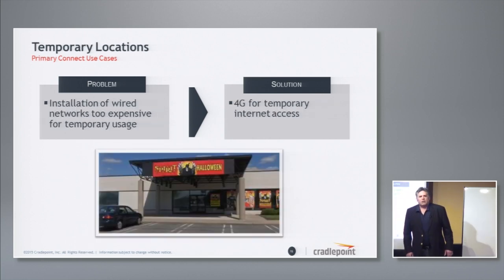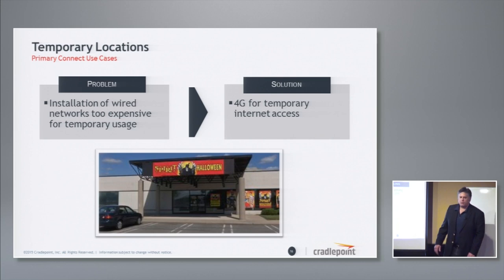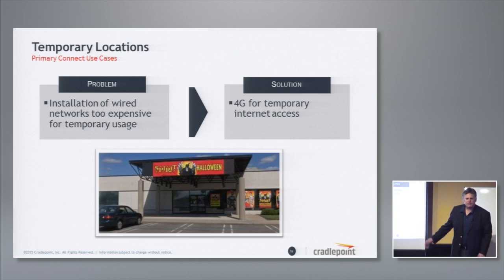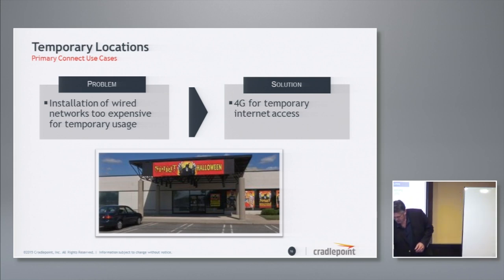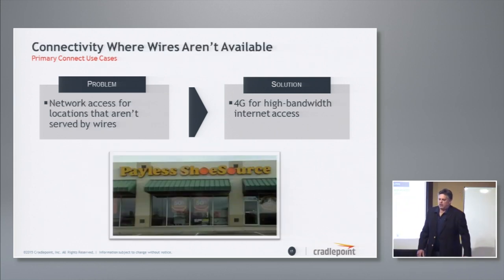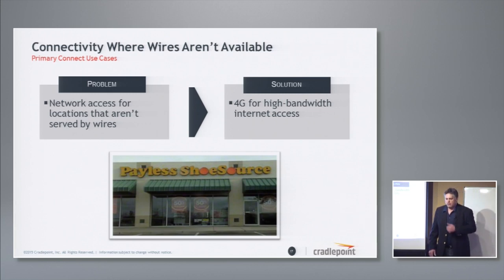Temporary locations: this is a pop-up retail store — Spirit Halloween. If you're going to open shop for two months, you're going to find a vacant building, and it just doesn't make sense to deal with wired connectivity. This is a great way for enterprises to pop up an extra Toys R Us for the holiday season, Halloween, et cetera. Connectivity where wires aren't available — I talked about the Hurricane Sandy example.